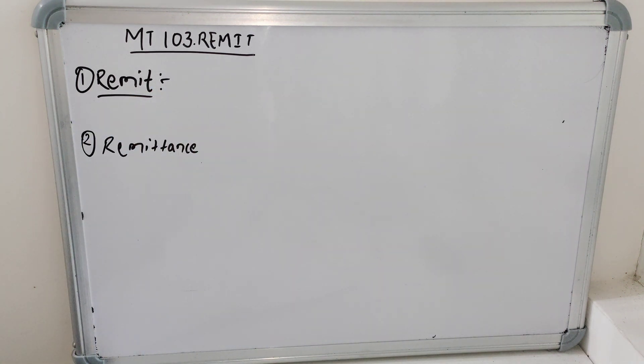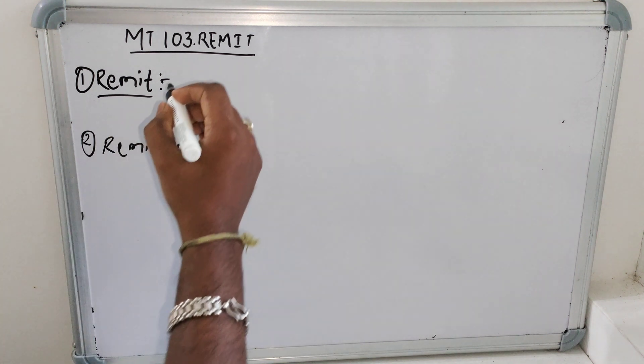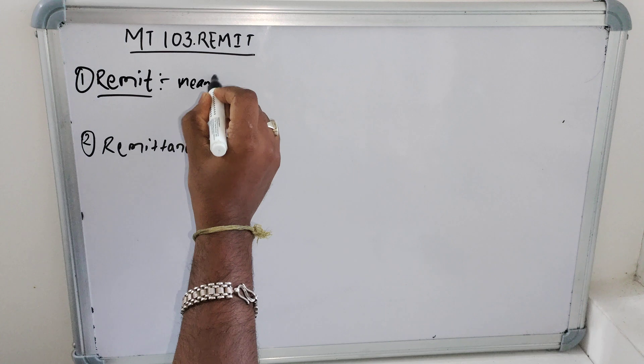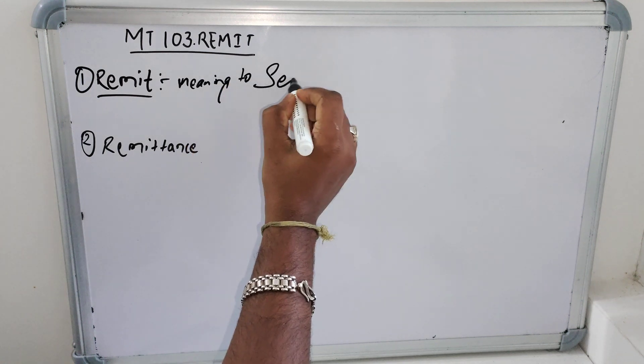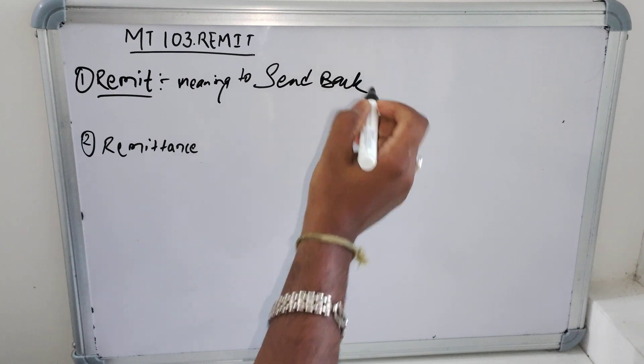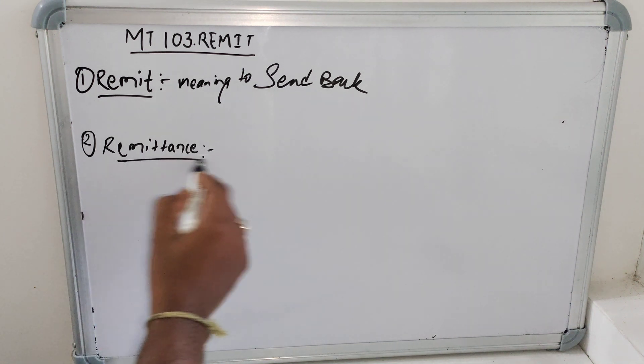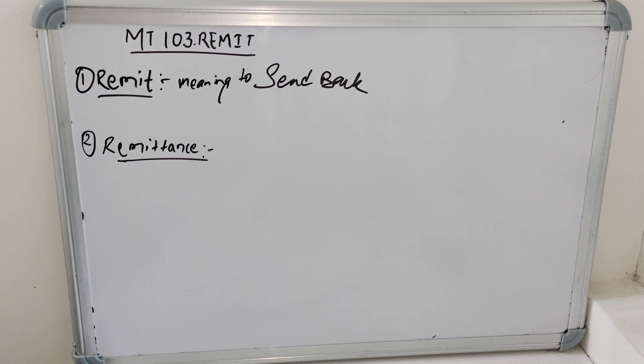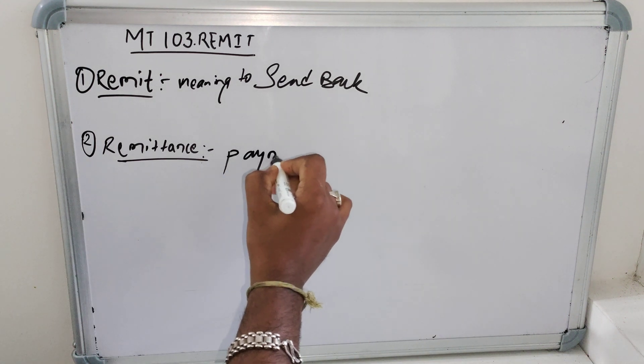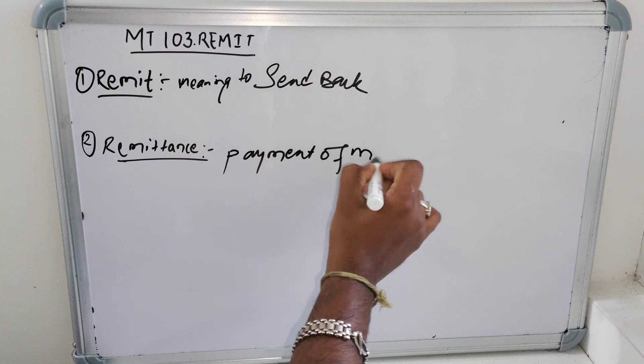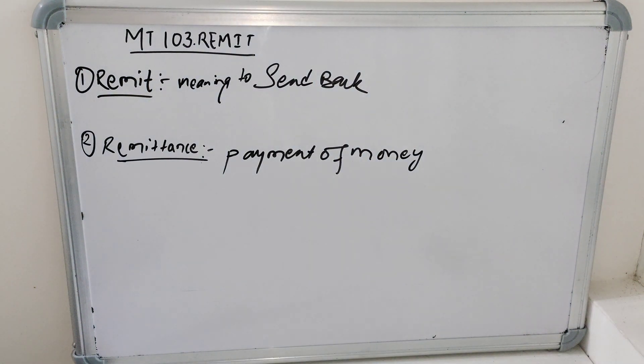First one, remit. What is remit? A basic definition of remit means sending back, meaning to send back. To send back anything is called as remit. Now what is remittance? Remittance is a payment of money that is transferred to another party.